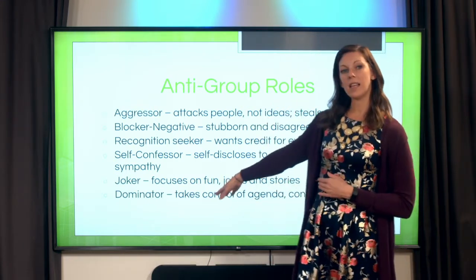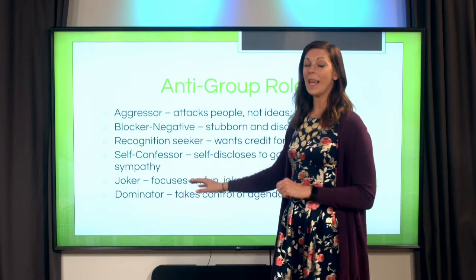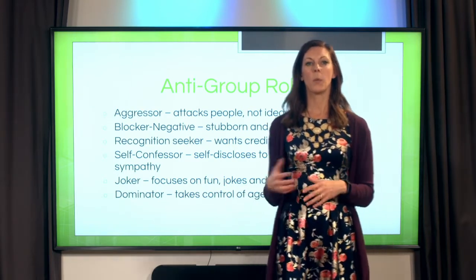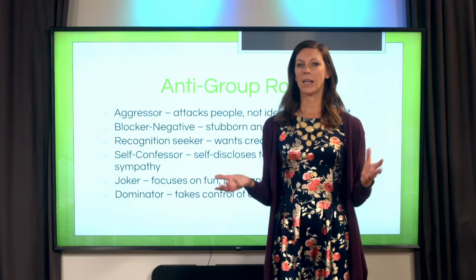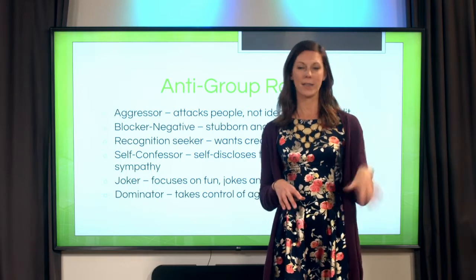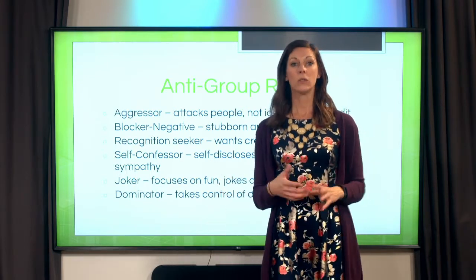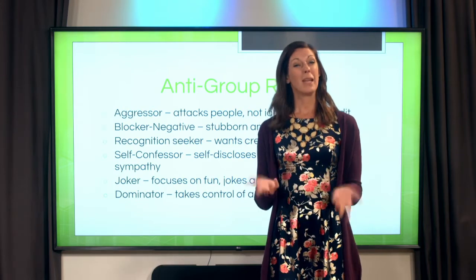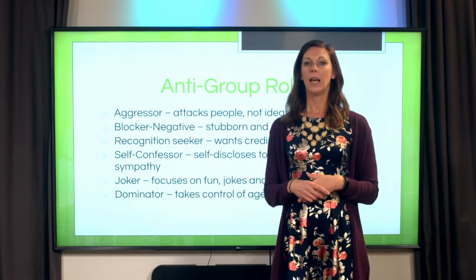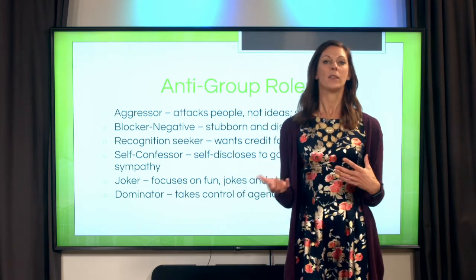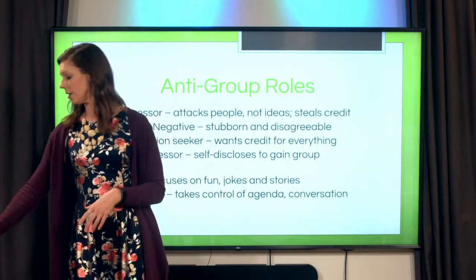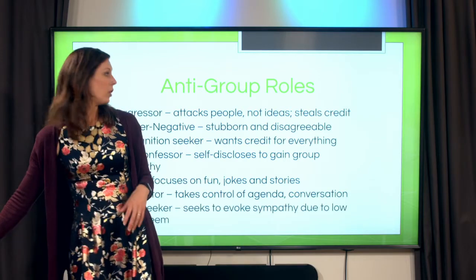A joker — as I said, the tension reliever is a positive social role, but can turn into an anti-group role if it becomes too off track. You've probably had those groups where one person just kept sharing memes or funny YouTube videos, and then you went down the YouTube hole. So sometimes that joker can be an anti-group role if it gets too excessive. And then the dominator is one we see often — just takes over and no one has a voice. We want to avoid these anti-group roles because they decrease effectiveness and often cause tension in the group.